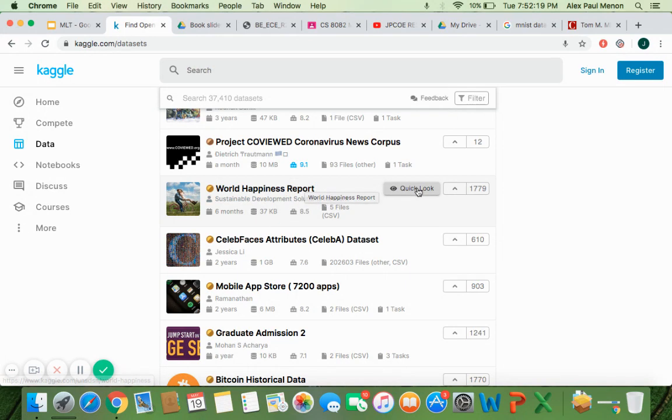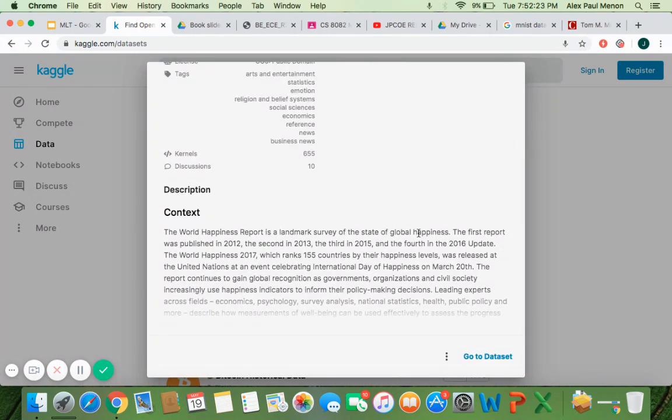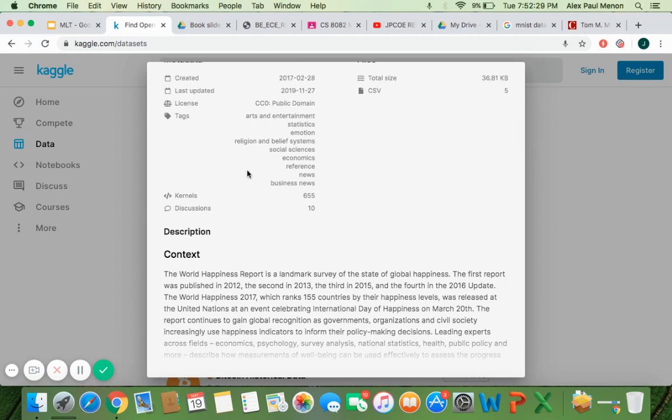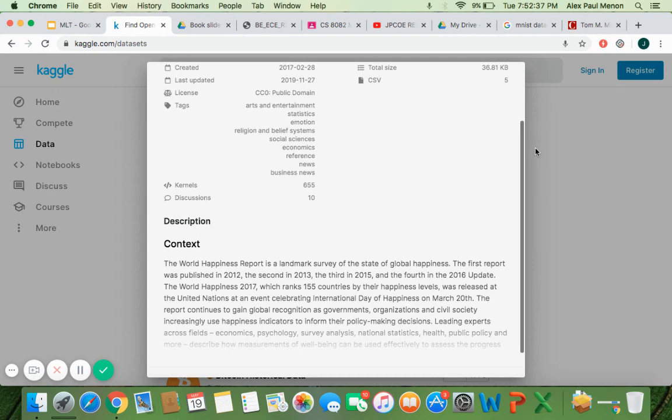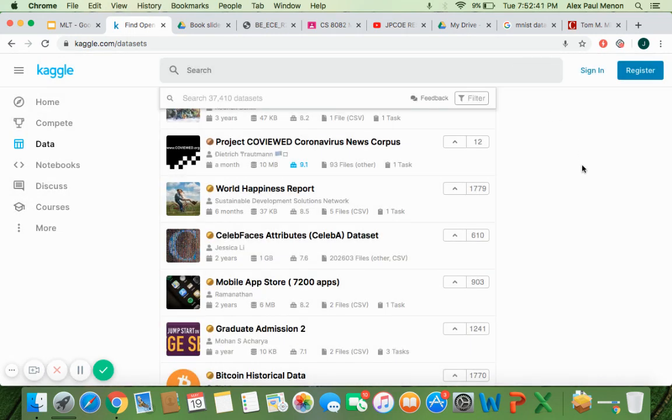So this is one data set where you can find whether people are happy in the country or not. So it is going to give you a lot of data with respect to the happiness related attributes like the emotions, the religious and belief systems, social science, economics, a lot of other data sets are taken. And we are trying to find what is the probability that people will be more happy in the future.